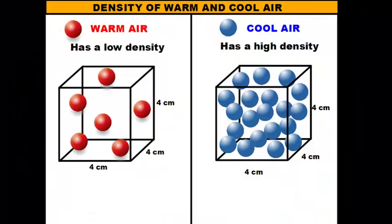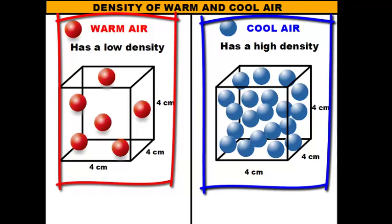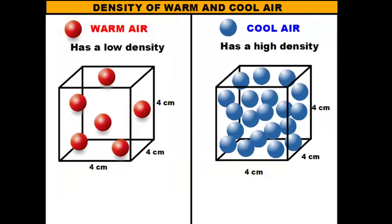So here on this slide, on the left I have warm air represented by red spheres, and on the right side I have cool air represented by the blue spheres. They're in the same cube that we saw in the last lesson, but the cube is just there to give you a constant volume, a constant space.